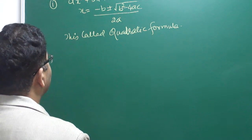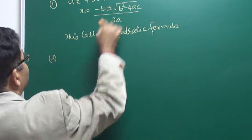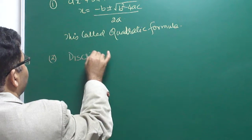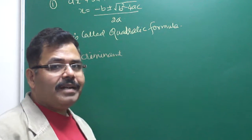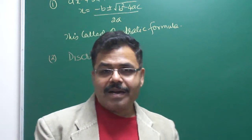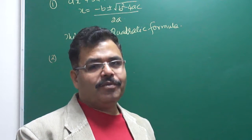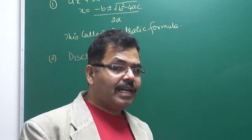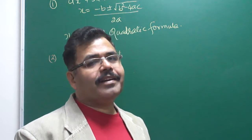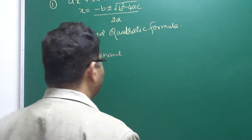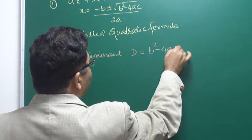This is what we discussed in the last class. Second, we discussed that this particular character is described as the discriminant. The discriminant is the one which describes the nature of the roots — what kind of roots are possible, whether they are real or equal or whatever. Its value is D equals b squared minus 4ac.